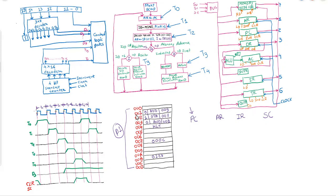The instruction part will store all the instructions while the data part will store all the data. As you can see, our program starts from memory location 001 and ends at 004. From 005 to 00B or 00D we have the data part where we will store the data.